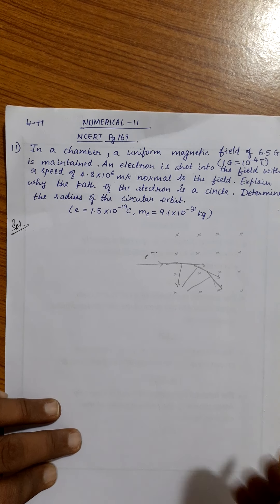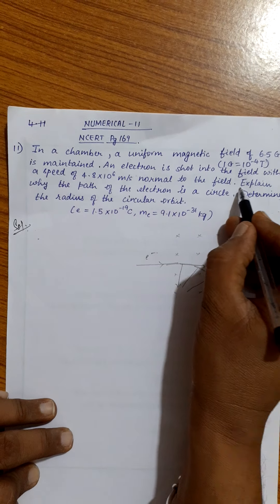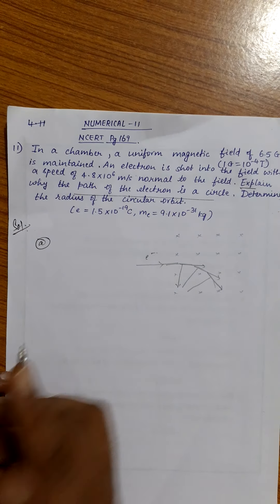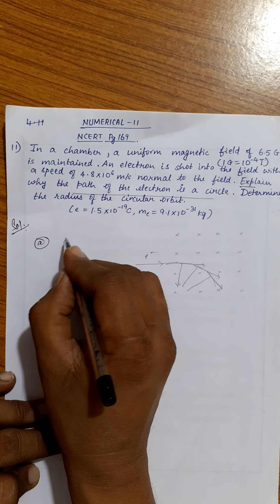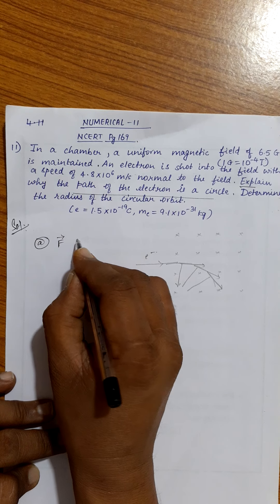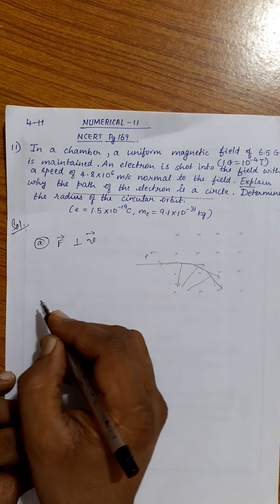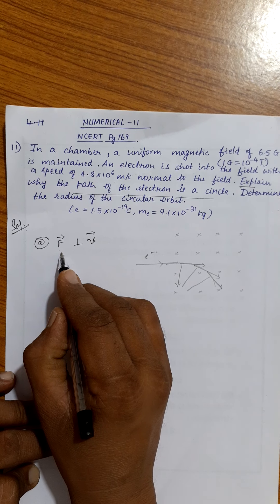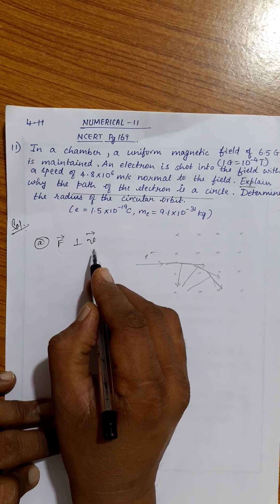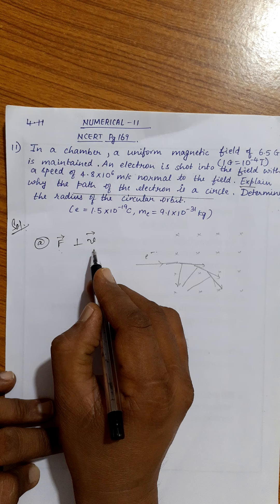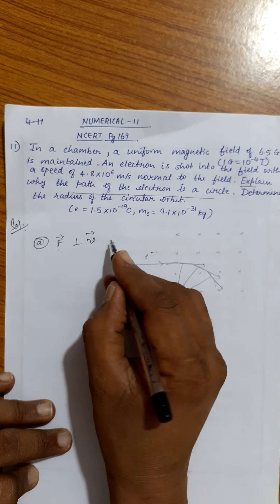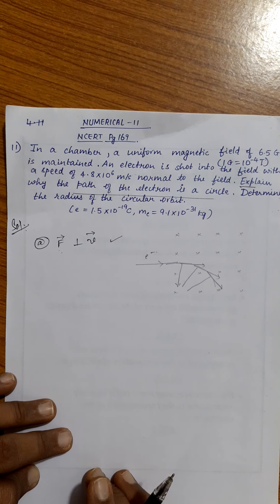What would be the answer for this question? First part, explain why the path of the electron is a circle. Simply you can write, the force is perpendicular to velocity. This force does not increase the speed of the particle, but changes the direction of the particle from moment to moment. That's why it is circular.